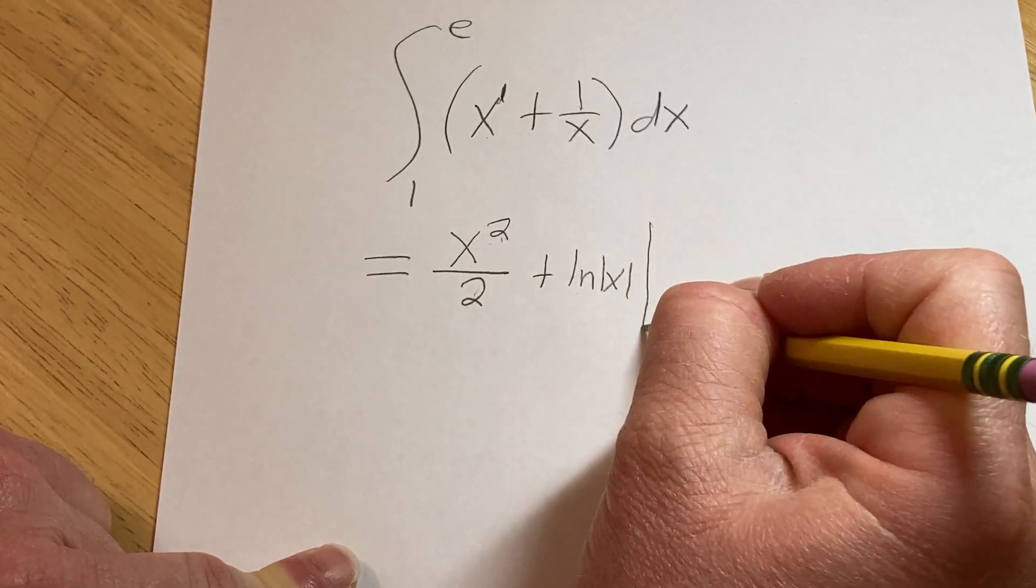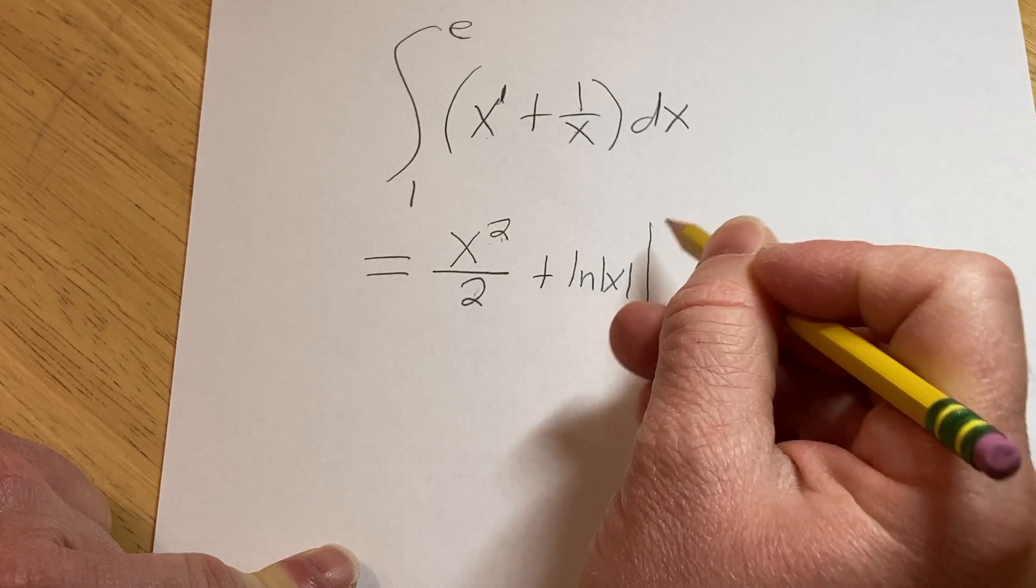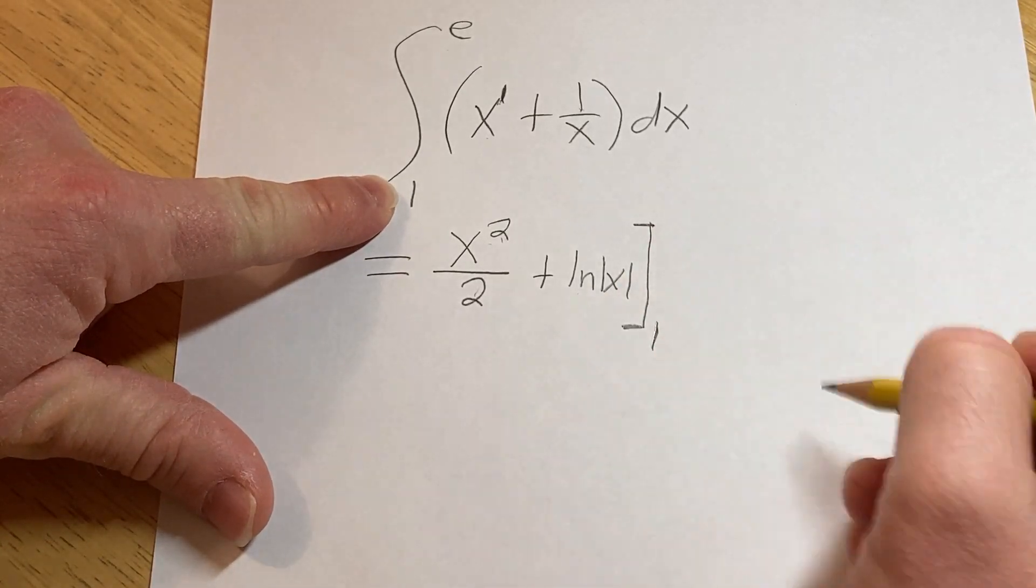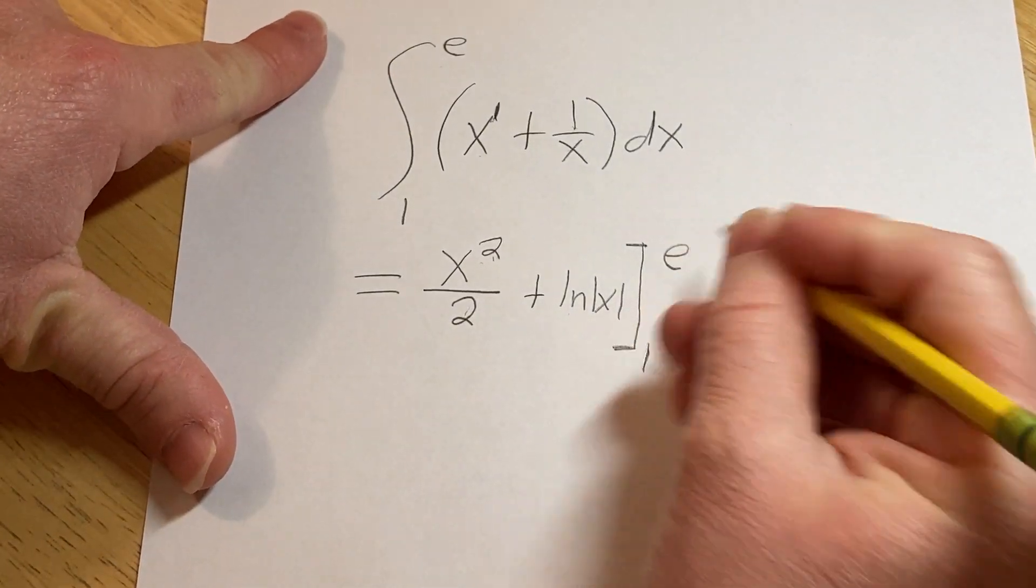Now you can put a line here or you can put a bracket. I prefer to use two brackets. And then our lower limit of integration is 1, so that goes here. And then our upper limit is e, so that goes here.